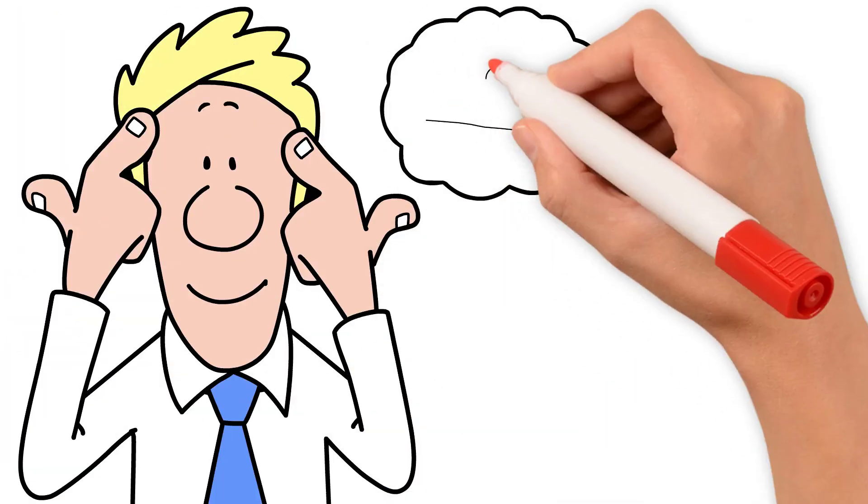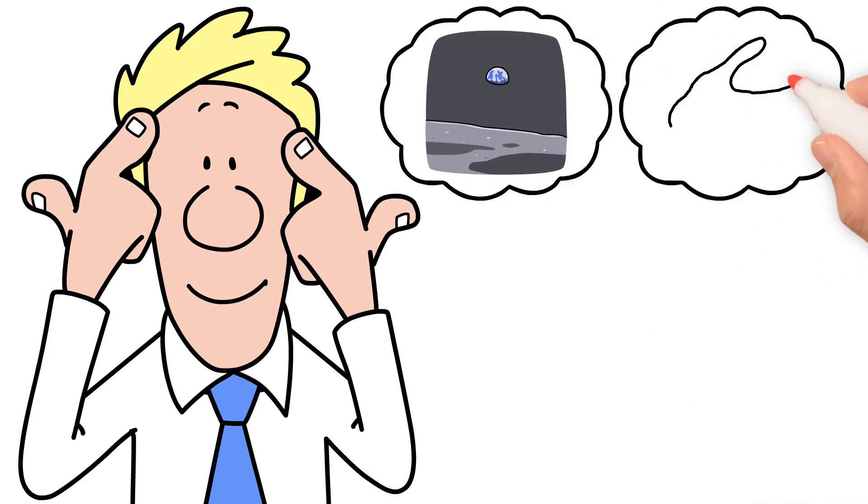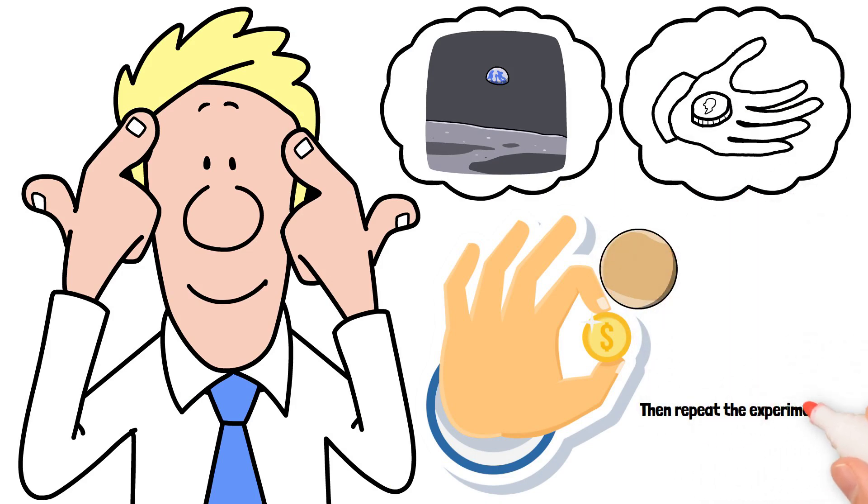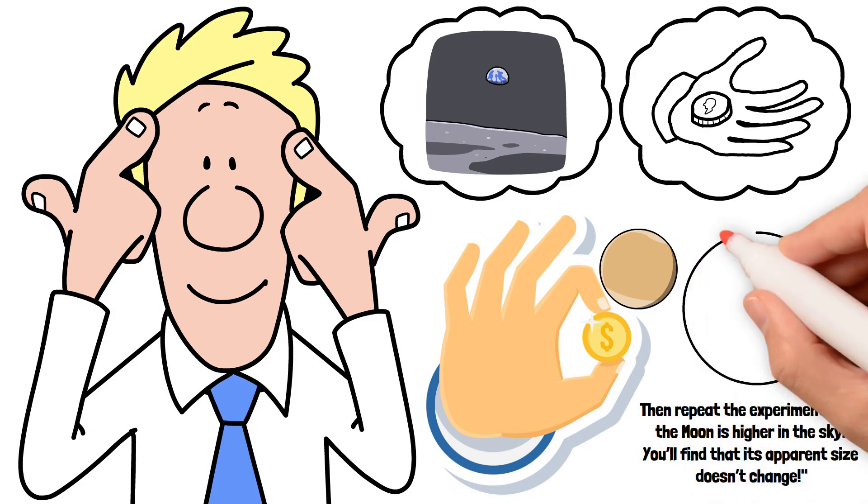Not convinced? You can test this yourself. The next time you see the moon on the horizon, take a small object, like a coin, and hold it at arm's length to cover the moon. Then repeat the experiment when the moon is higher in the sky. You'll find that its apparent size doesn't change.